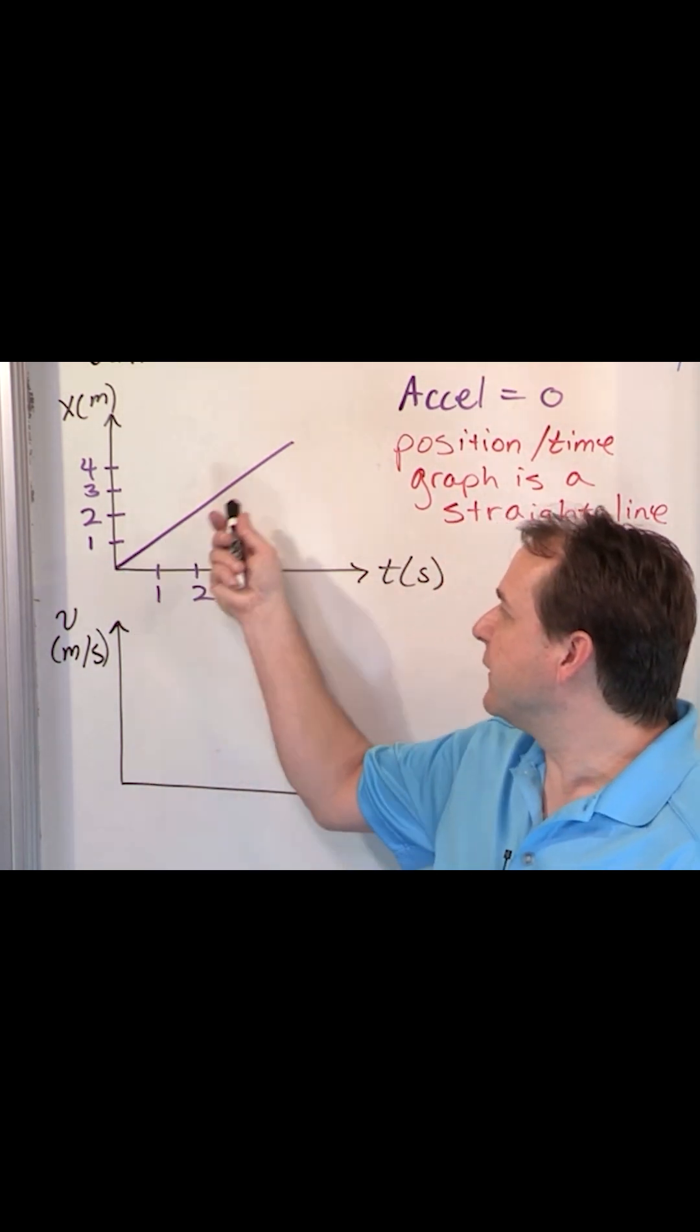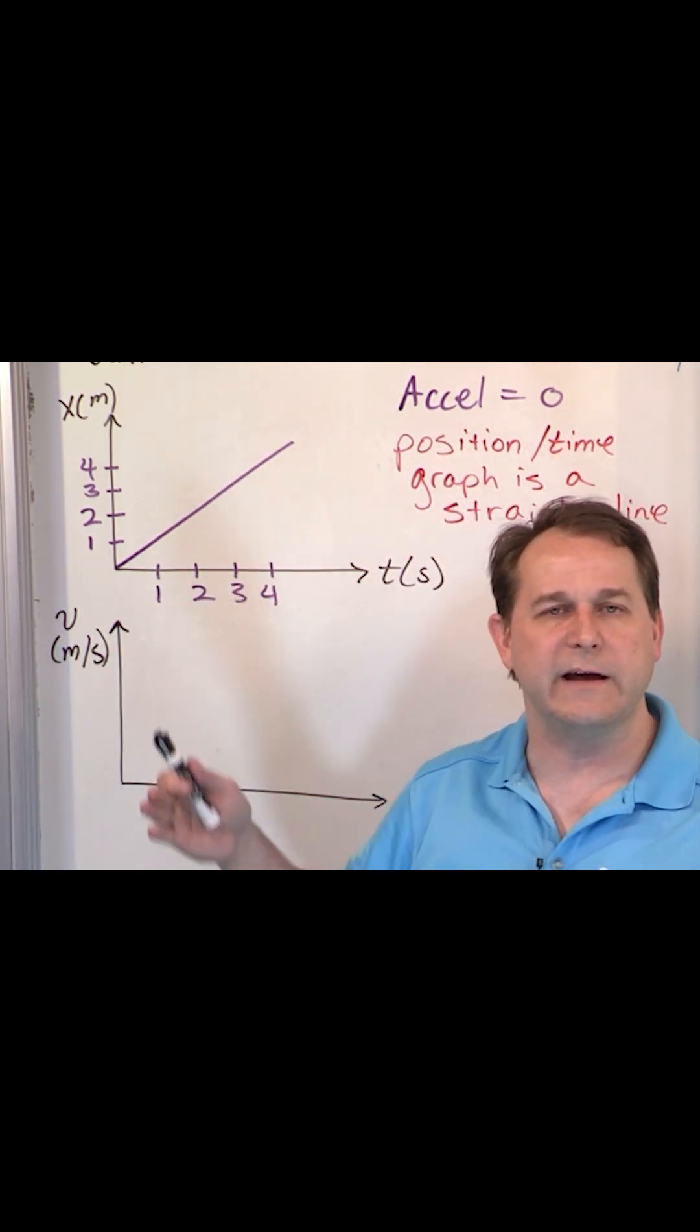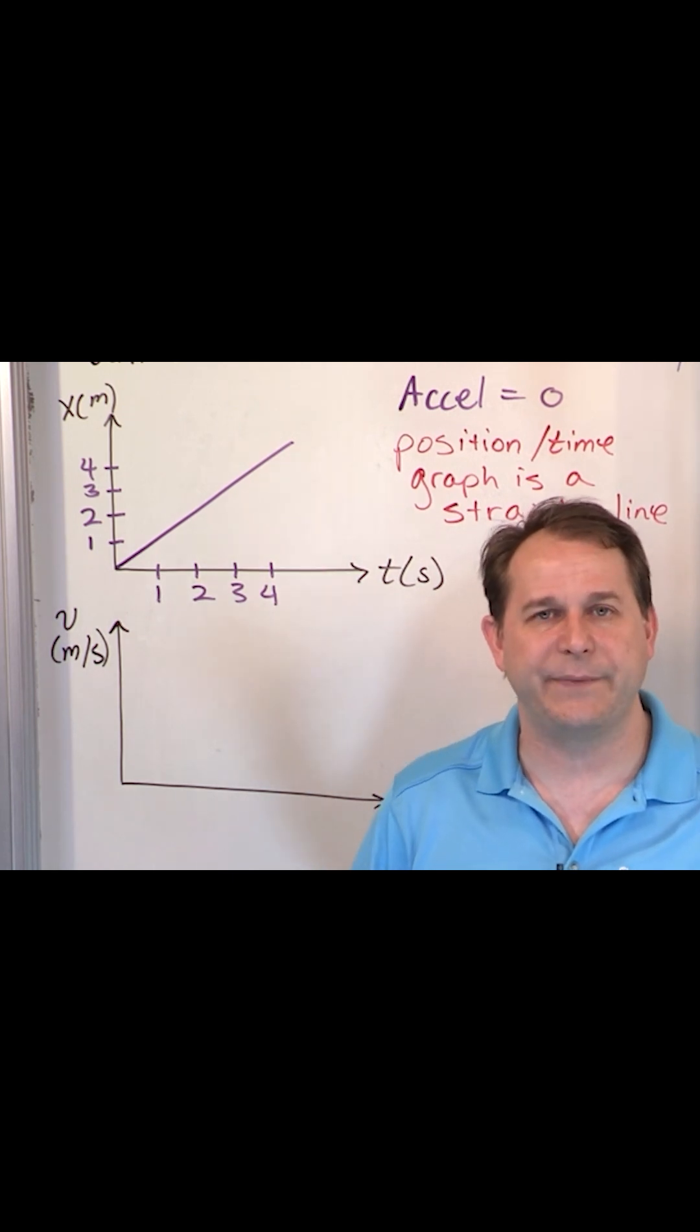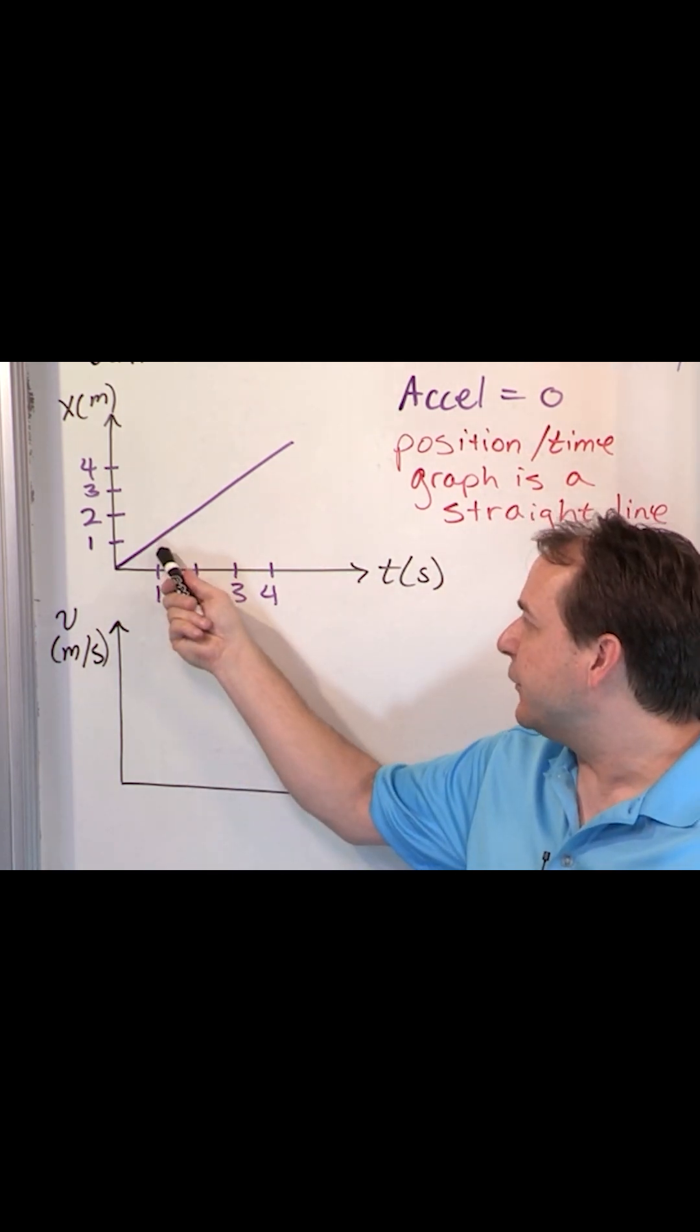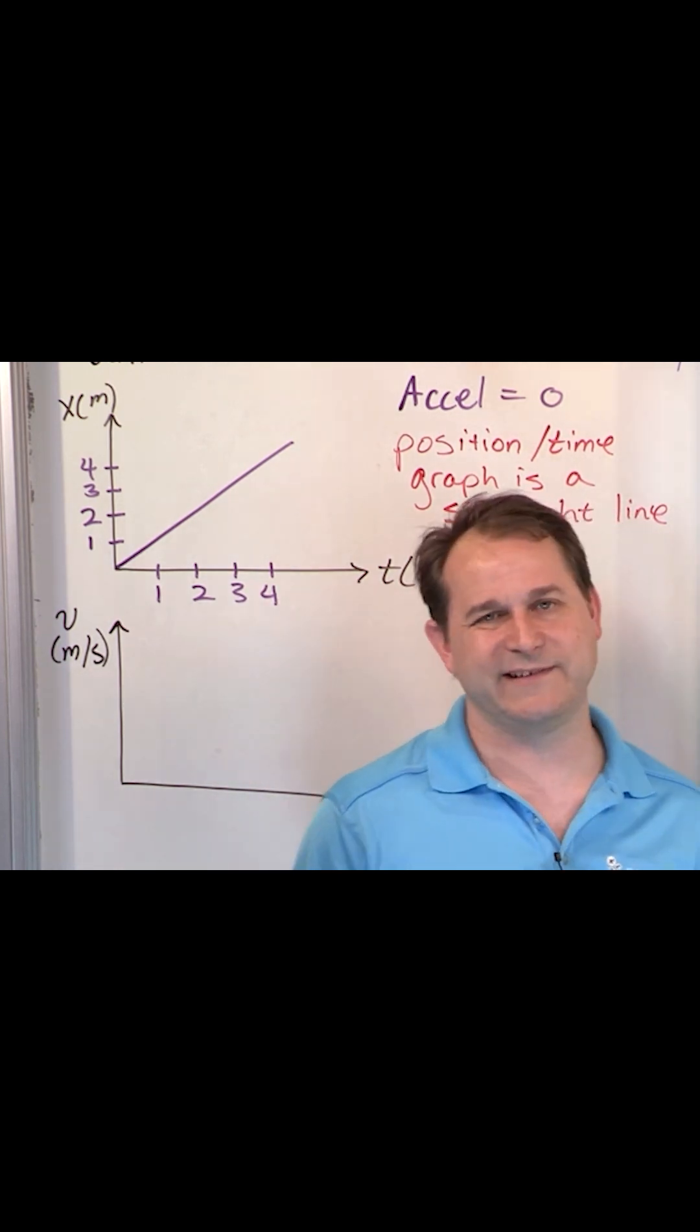So the instantaneous velocity is the slope in the line tangent to this thing, which just means it's the slope of this curve at all points is exactly the same thing. So the velocity here is the same as the velocity here is the same as the velocity here because you're looking at the slope at those different points and they're all the same thing.